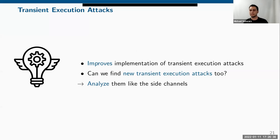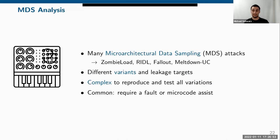So we've seen that fuzzing for a few hours already improves transient execution attacks. But can we also find entirely new vulnerabilities? Yes. We focused on Microarchitectural Data Sampling (MDS) attacks — including Zombie Load, Riddle, Fallout, and Meltdown-Uncacheable — which all have different variants with different leakage targets and trigger methods. They all share a common structure that we can exploit for fuzzing: they all require a fault.